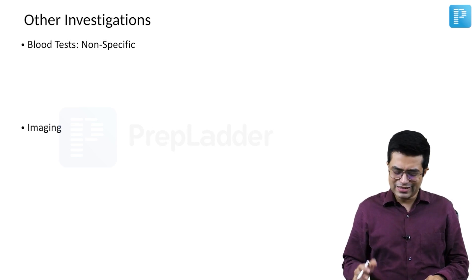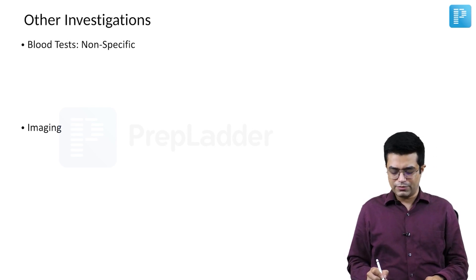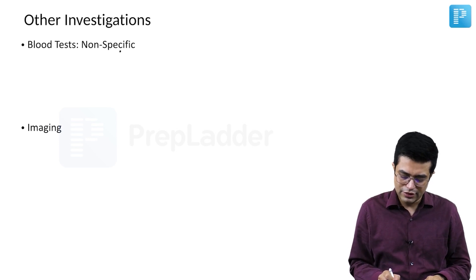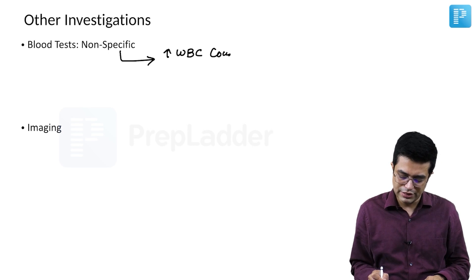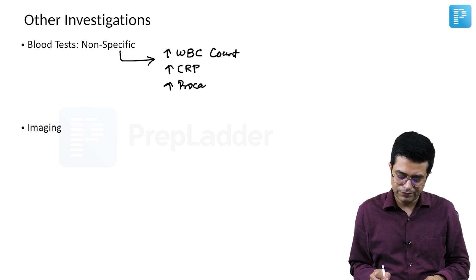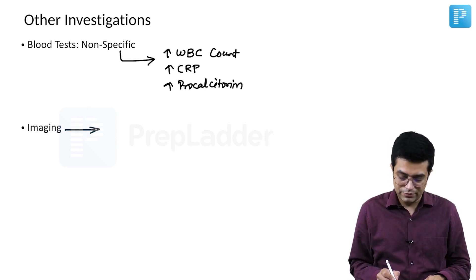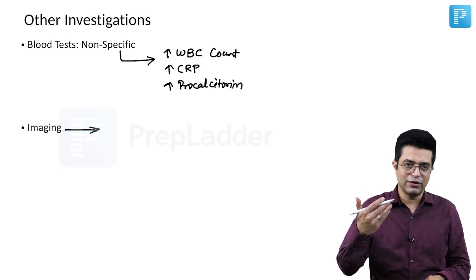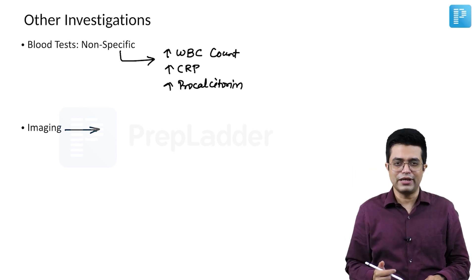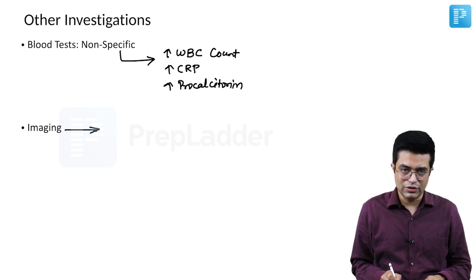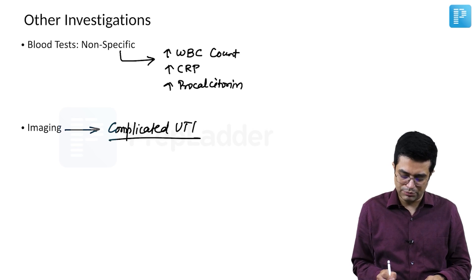Blood tests are sometimes performed but are non-specific — they simply confirm that infection is present. Blood tests may show a rise in WBC count (leukocytosis), and some patients may have raised CRP as well as procalcitonin, but these are again non-specific. Imaging studies are performed only when you are suspecting acute pyelonephritis or complications related to UTI — imaging is needed in complicated UTI, not in simple UTI.